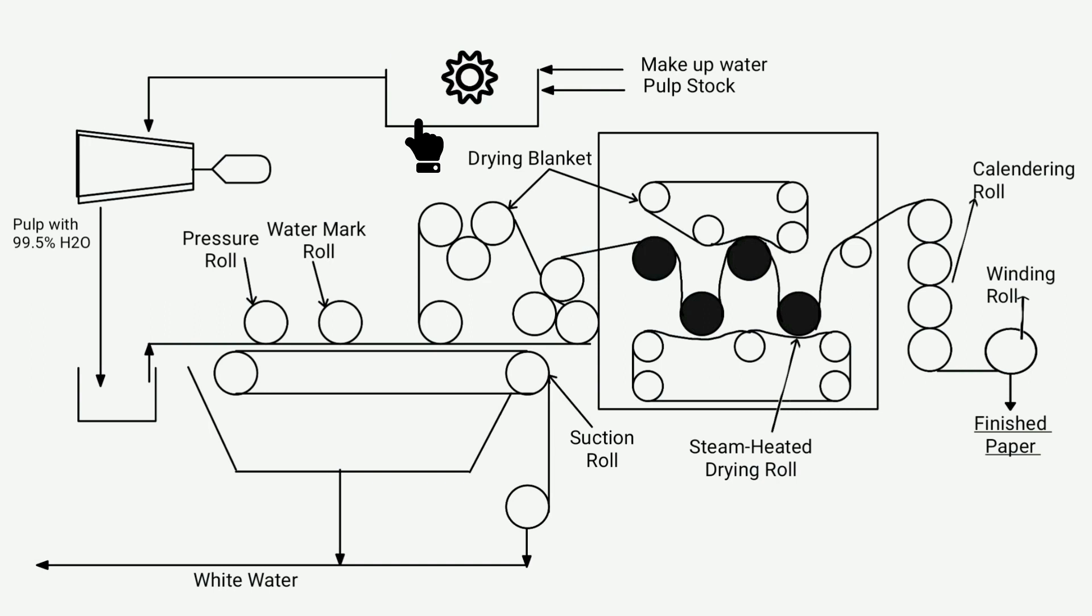In the beater, a process called beating takes place, where fibers are cut into very small sizes by rotating drums with attached knives, also known as rotating stationary discs. Here a viscous shear infusing solution is formed, which is called fiber suspension or water fiber slurry.